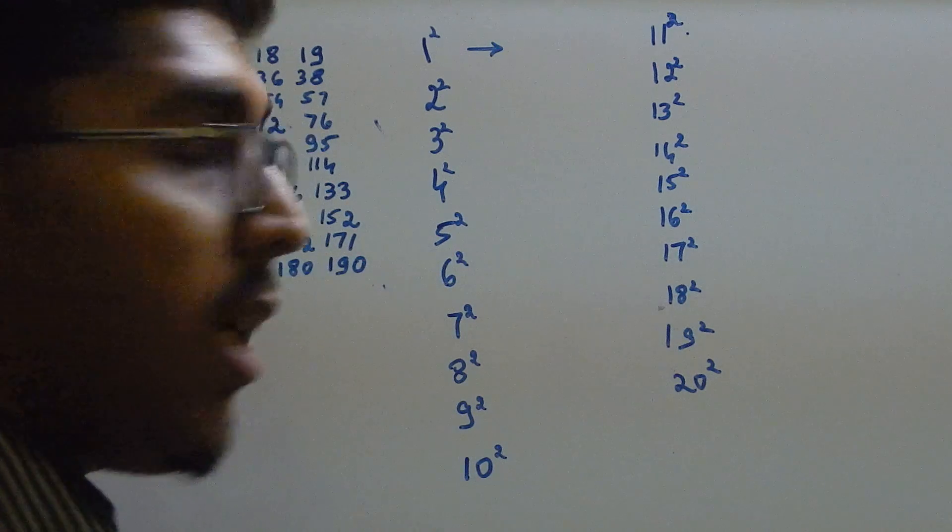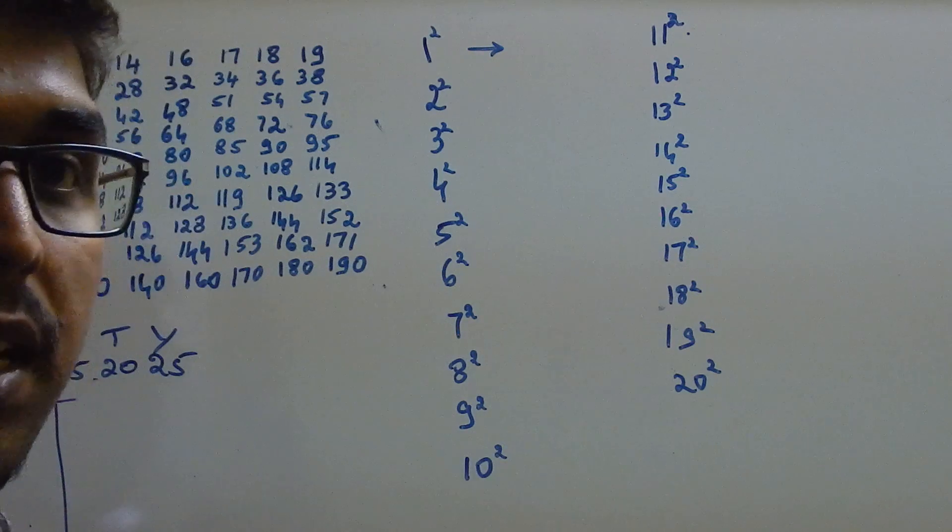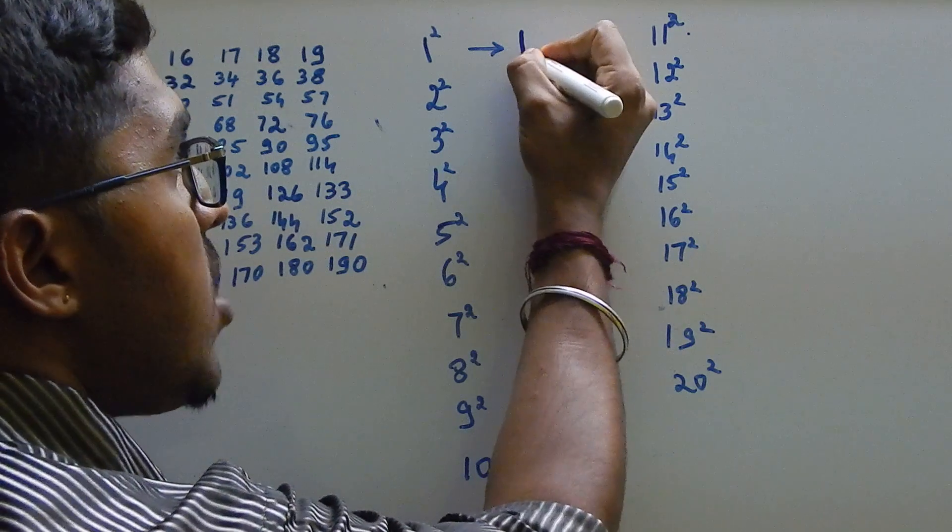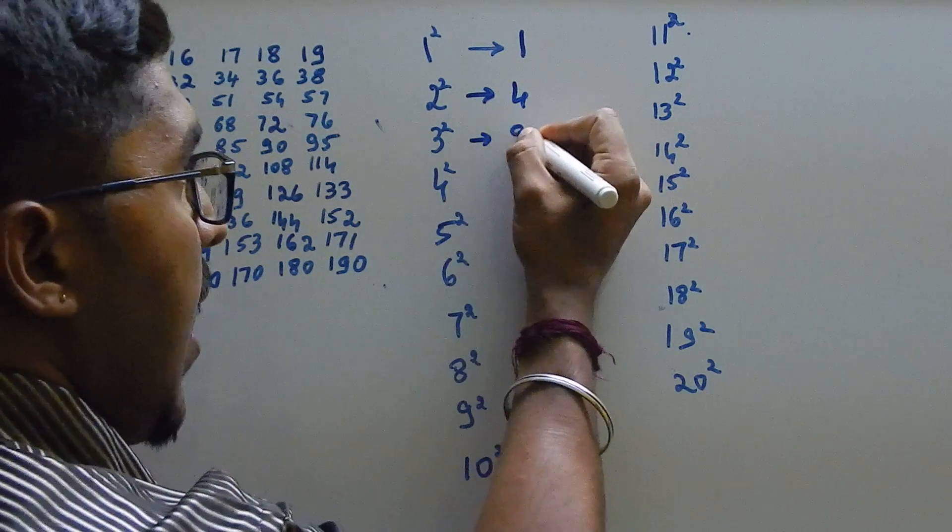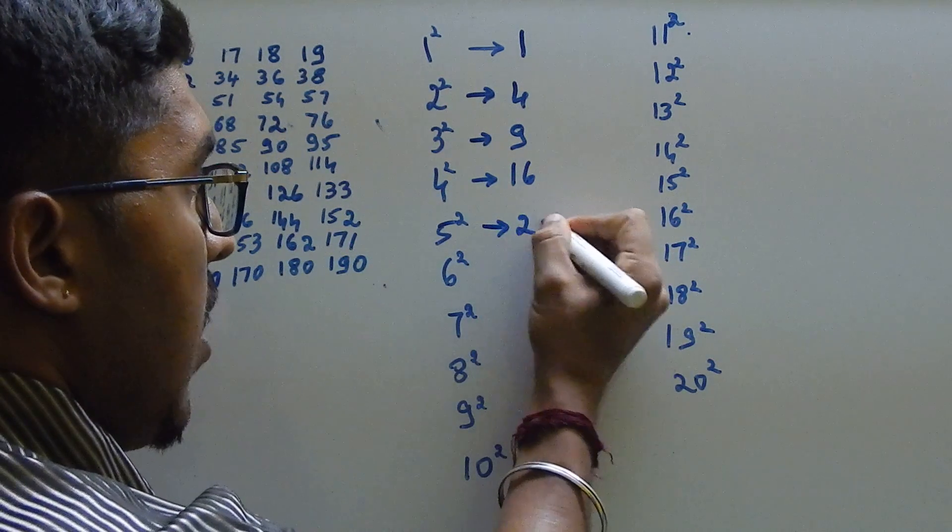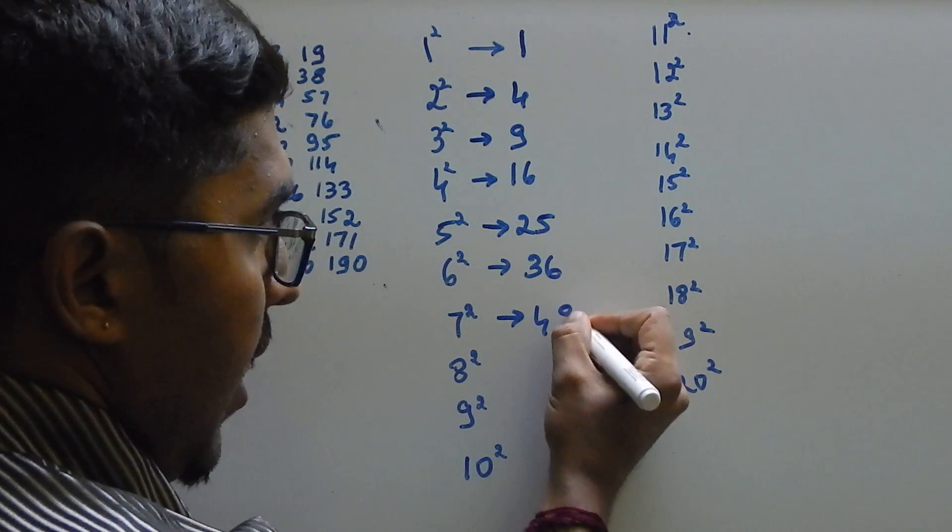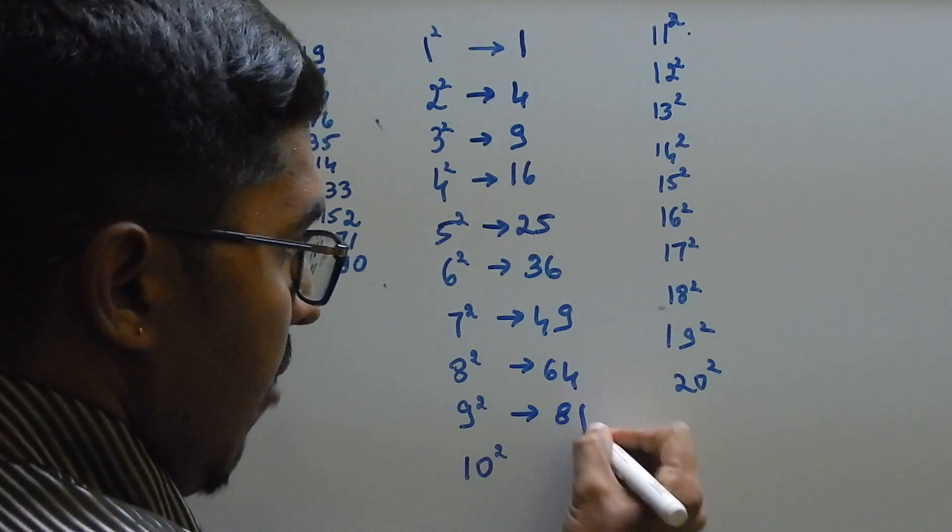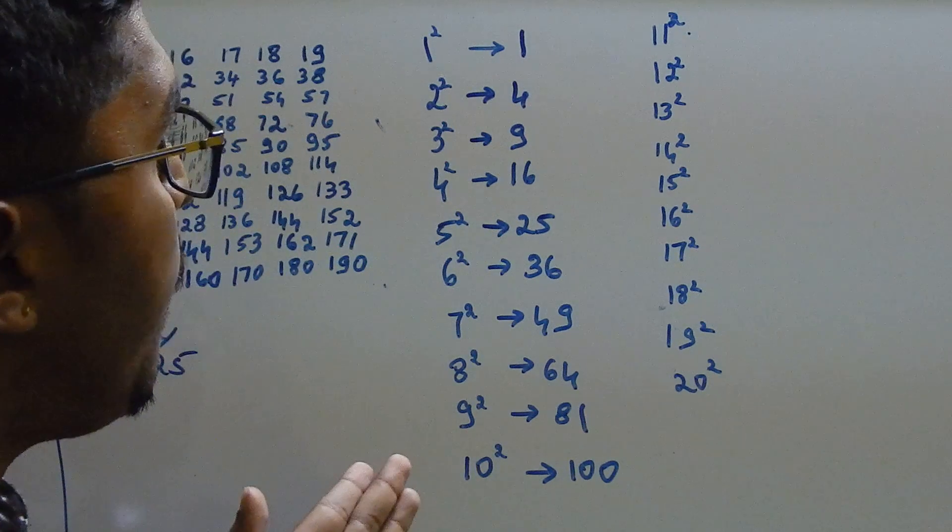So now let us see the squares from 1 to 20, then later let's see from 21 to 30. One square we know it is 1, 2 square 4, 3 square 9, 4 square 16, 5 square 25, 6 square 36, 7 square 49, 8 square 64, 9 square 81, 10 square 100. This everyone will be knowing, but